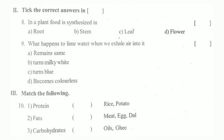Next, take the correct answers. In a plant, food is synthesized in — root, stem, leaf, or flower? Leaf is the correct answer. What happens to lime water when we exhale air into it? It remains the same, turns milky white, turns blue, or gets colorless?